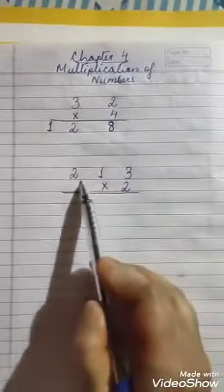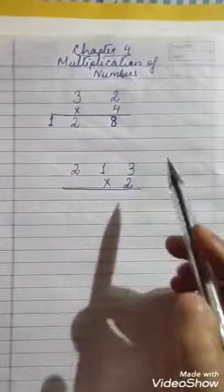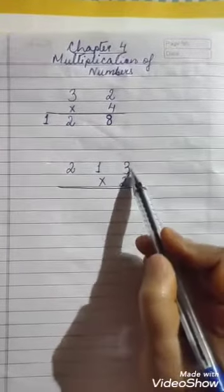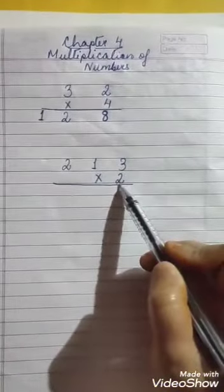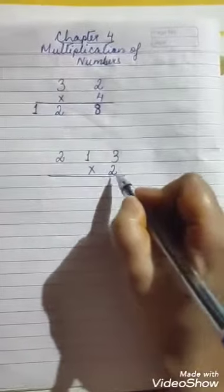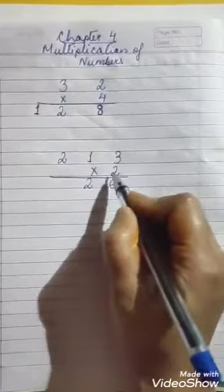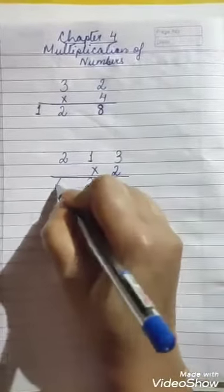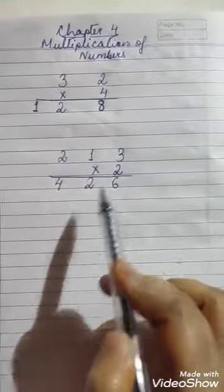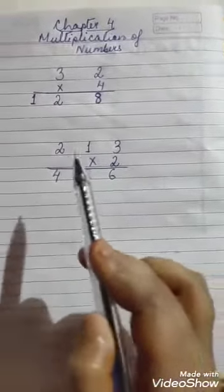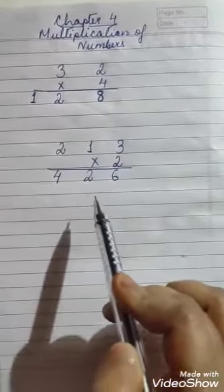Next, we will multiply a three-digit number by a one-digit number. Here also we will start from the ones place, then tens, then hundreds. First, we multiply 2 into 3 — 2 threes are 6. Next, 2 ones are 2. Then 2 twos are 4. That means 213 multiplied by 2 equals 426.